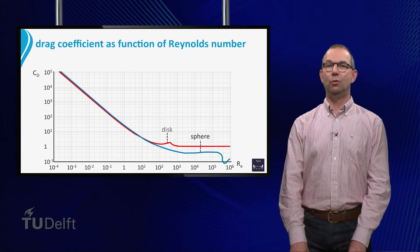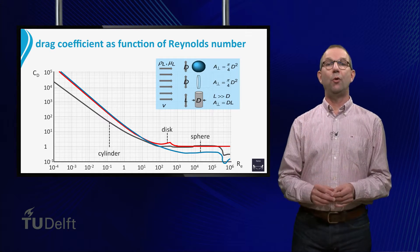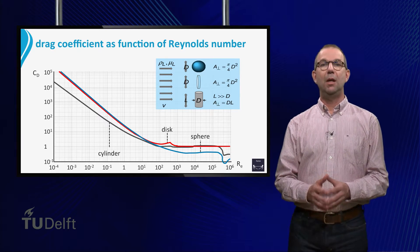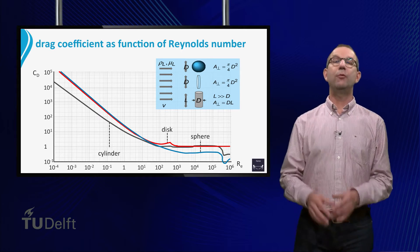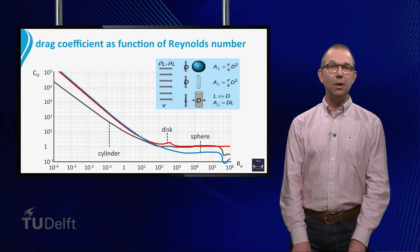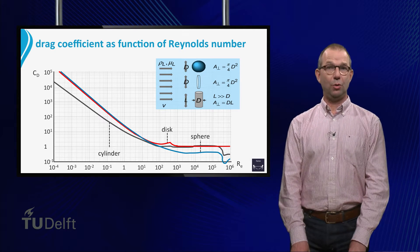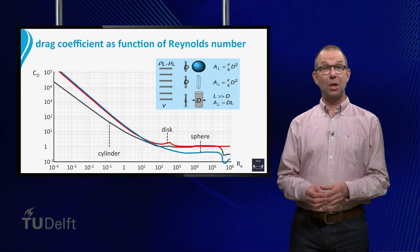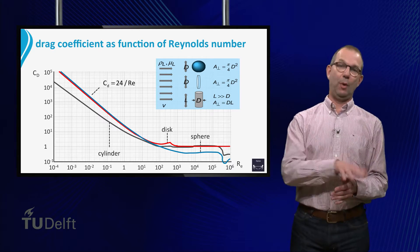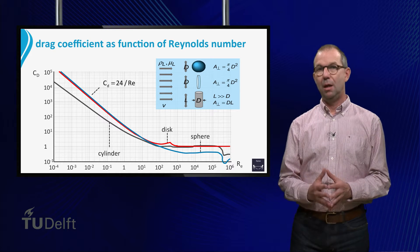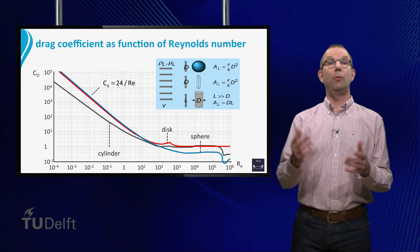In today's lecture we will focus on the drag coefficient. CD depends not only on the Reynolds number — it is also different for objects of different shapes. It is virtually impossible to find CD by deriving analytic solutions from the flow equations. Only for low Reynolds numbers and simple shapes is this possible. For instance, Gabriel Stokes found that for spheres at Reynolds number smaller than 1, the drag coefficient CD equals 24 over Reynolds.